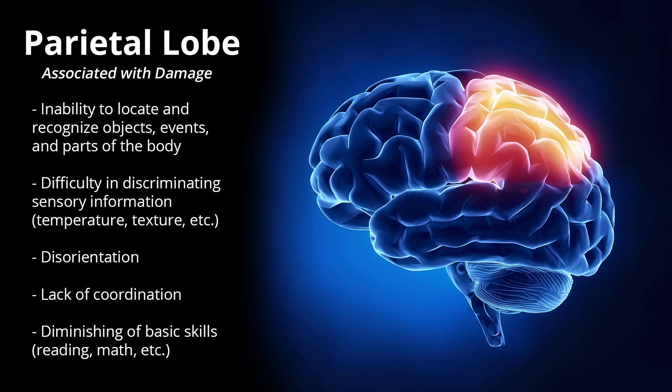Conditions associated with damage to the parietal lobe include inability to locate and recognize objects, events, and parts of the body; difficulty in discriminating sensory information such as temperature and texture; disorientation; lack of coordination; and diminishing of basic skills such as reading and math.